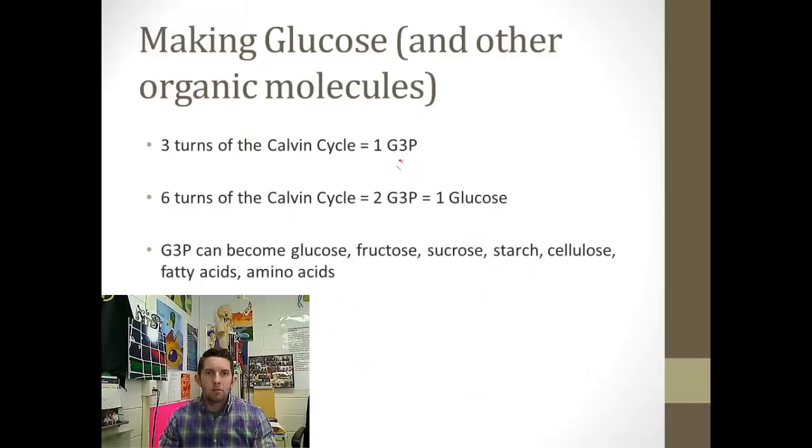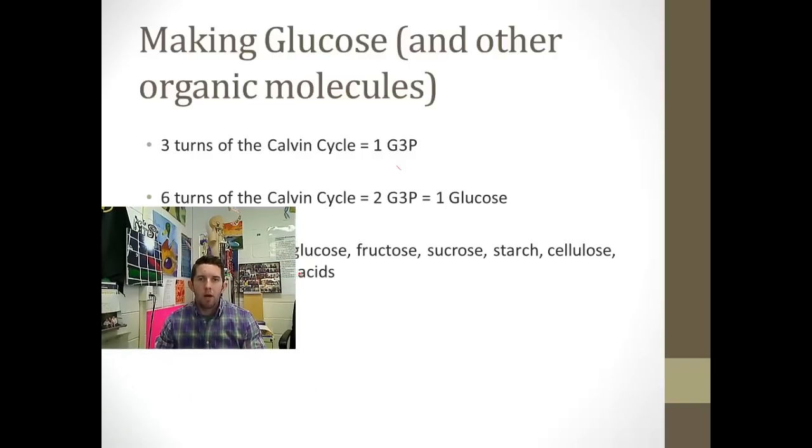In making glucose, three turns make one G3P, so six turns make two G3Ps, which equals one glucose. Why is G3P so important? It's a very diverse, dynamic molecule. It can become glucose, fructose, disaccharides, polysaccharides like starch and cellulose. It can become the pieces of lipids in fatty acids. It can become the building blocks of proteins like amino acids. Extremely diverse, extremely important.